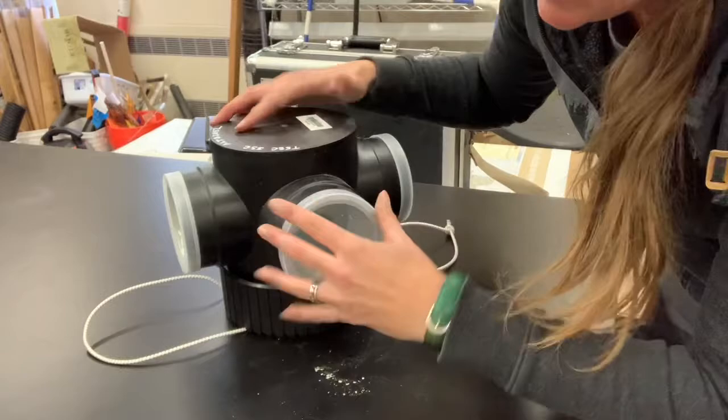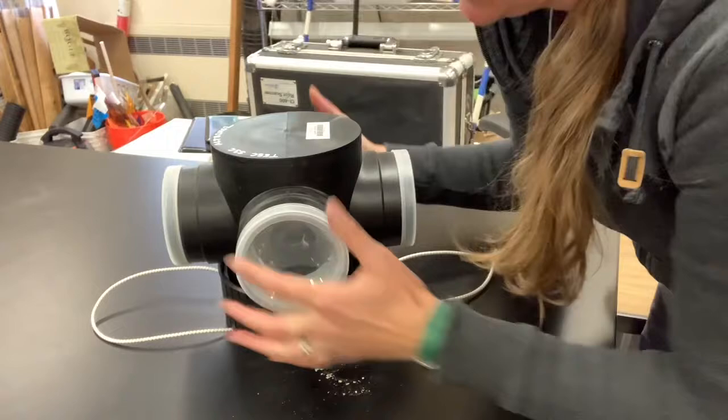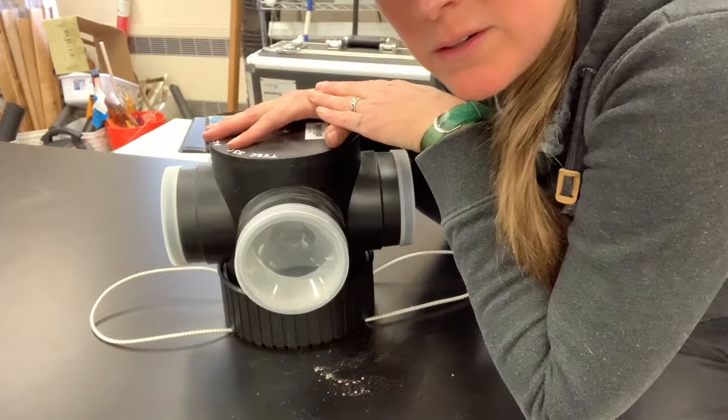They would come into the trap, and usually you would put some soapy water at the base on the inside of the trap so that when they fall into the water, there's no surface tension and they get trapped in the water.